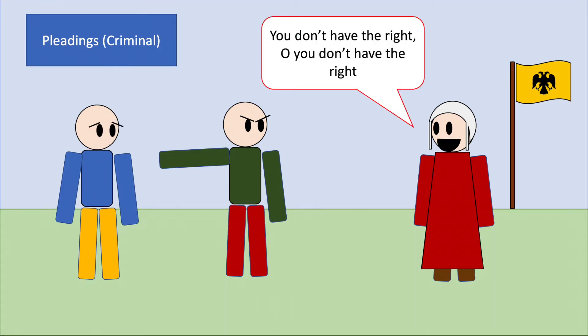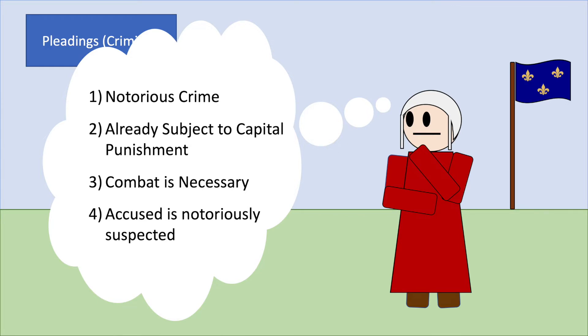Another major change that we see in the trial by combat system for all countries, as time goes on and the system evolves, is that trial by combat becomes available only in a select few types of cases. In France in 1306, a limitation was put on trial by combat requiring four requirements to be met in the pleading stages. One: the crime must be homicide, treason, or another serious or infamous crime. Two: the crime must be capital — deserving of capital punishment; not mere larceny or burglary, no matter how much was stolen. Three: the judge had to be satisfied that combat was the only way to maintain a conviction — in other words, justice demanded it.